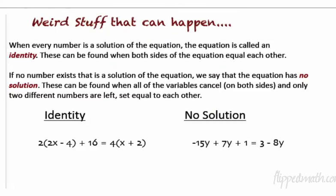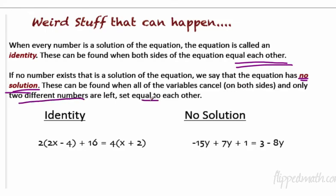Now for some weird stuff that can happen. When every number is a solution to the equation, the equation is called an identity — found when both sides of the equation equal each other. If no number exists that is a solution, we say the equation has no solution — found when all variables cancel out on both sides and two different numbers are left set equal to each other.